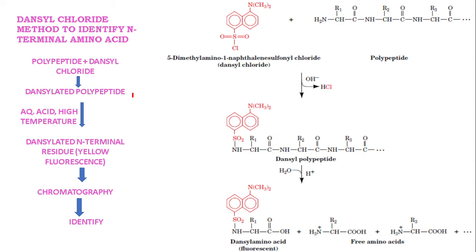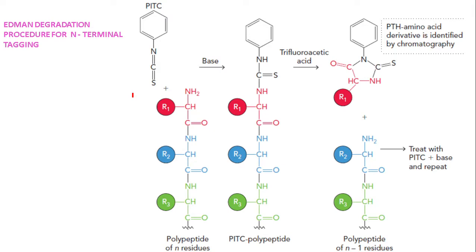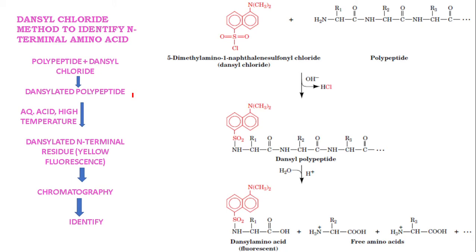Now we are going to see the danzyl chloride method to identify the N-terminal amino acid. In the previous slide we had seen Edman degradation procedure to tag the N-terminal amino acid. Here we have danzyl chloride — actually, what is danzyl chloride? It is 5-dimethylamino-1-naphthalene sulfonyl chloride, that is what is called danzyl chloride.